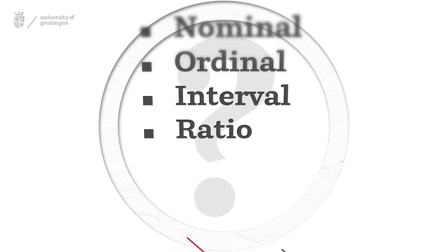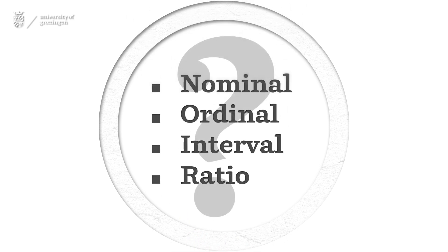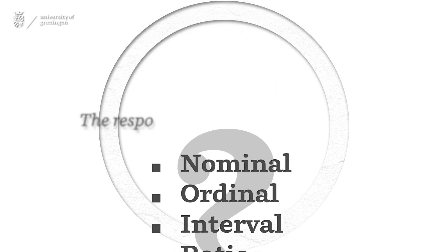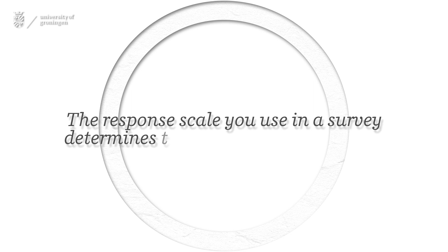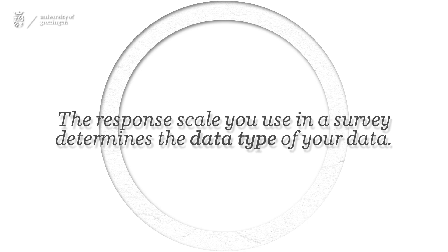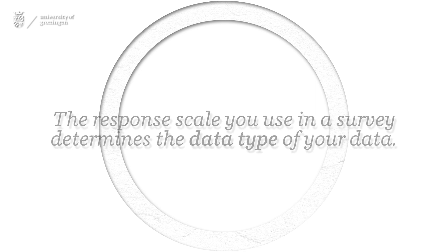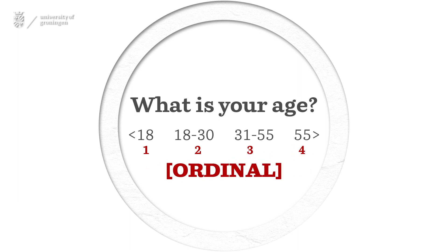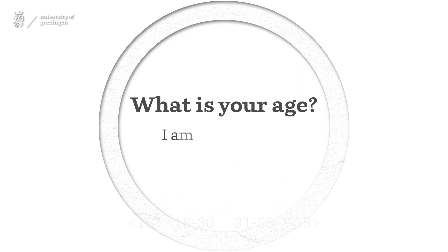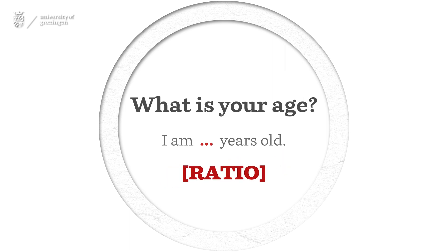So, why is it relevant for you to know these four data types? First, the response scale you use in a survey determines the data type of your data. For example, you can measure age by using different response scales. If you measure age in categories, you'll end up with ordinal data. However, if you measure age in years, you will end up with ratio data.